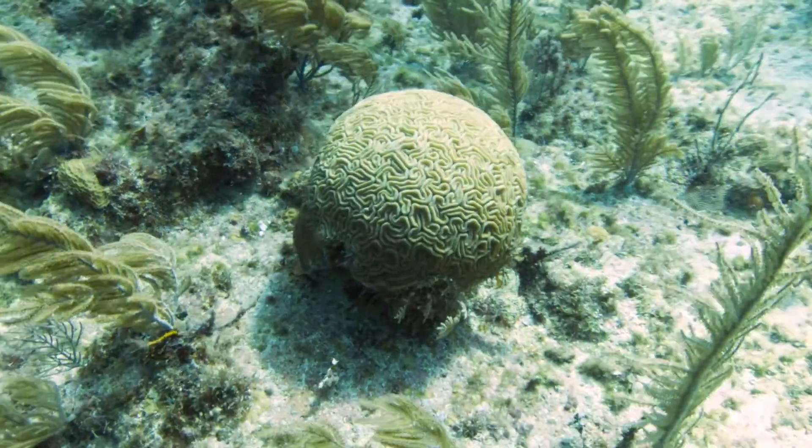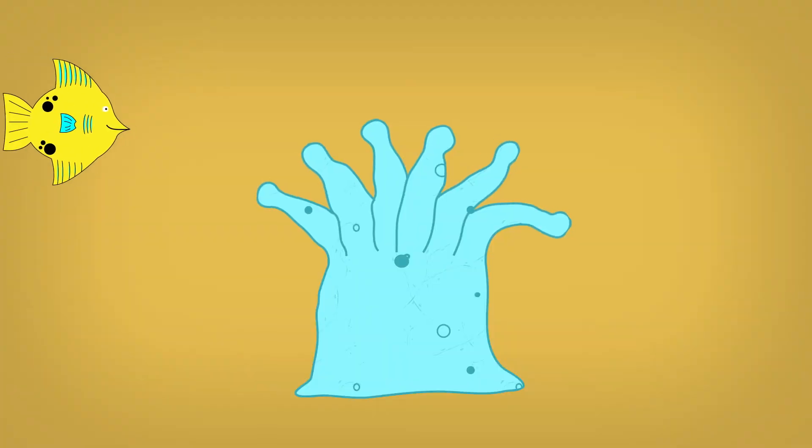In exchange for that sugary treat, the coral polyp provides the tiny algae with a comfortable place to live and with nutrients that the coral filters from the water around it.